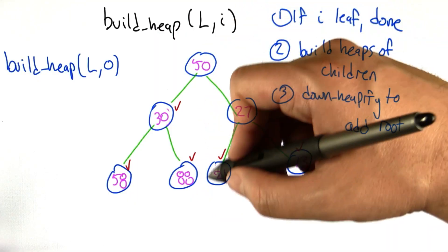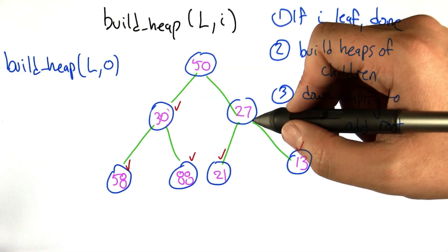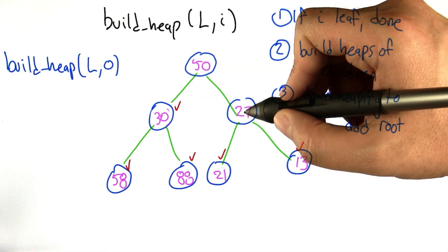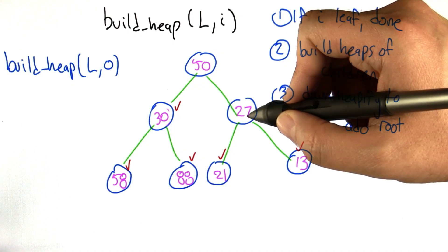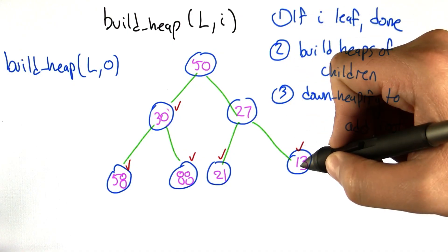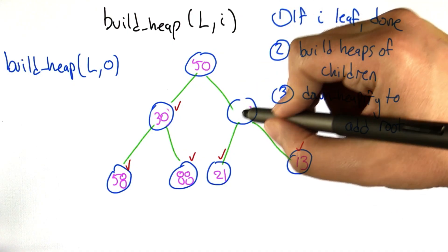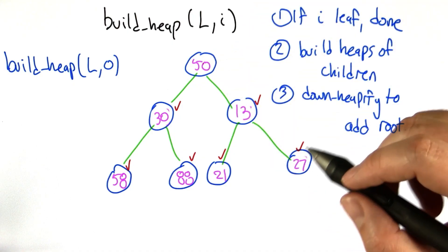We need to do the other subtree — same trick. Those leaf nodes are already heaps. To make this subtree into a heap, we swap the root with the smaller of its children, which is 13. Now downheapify is finished, so this subtree is a heap.